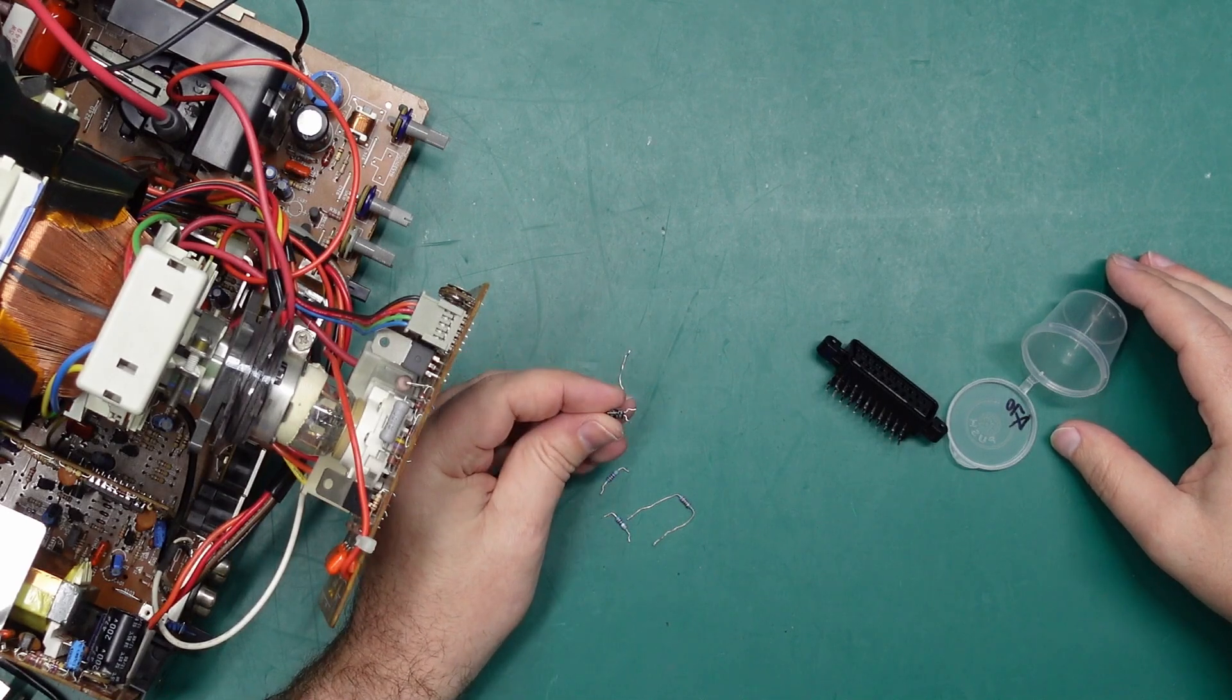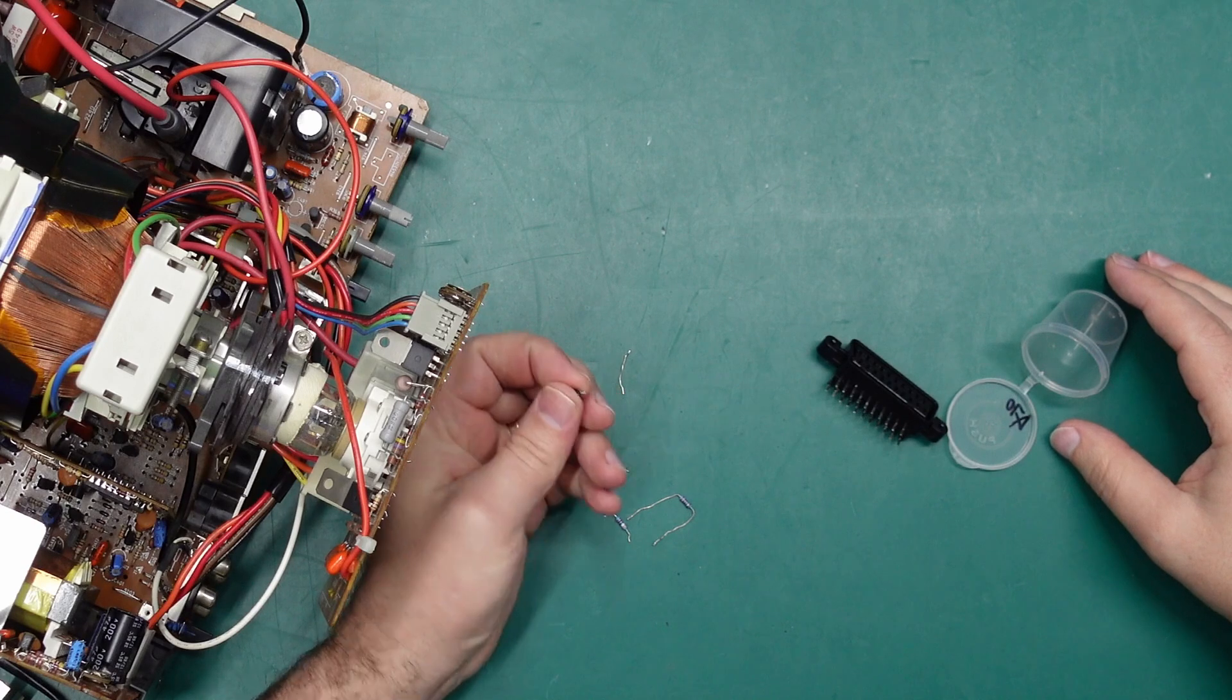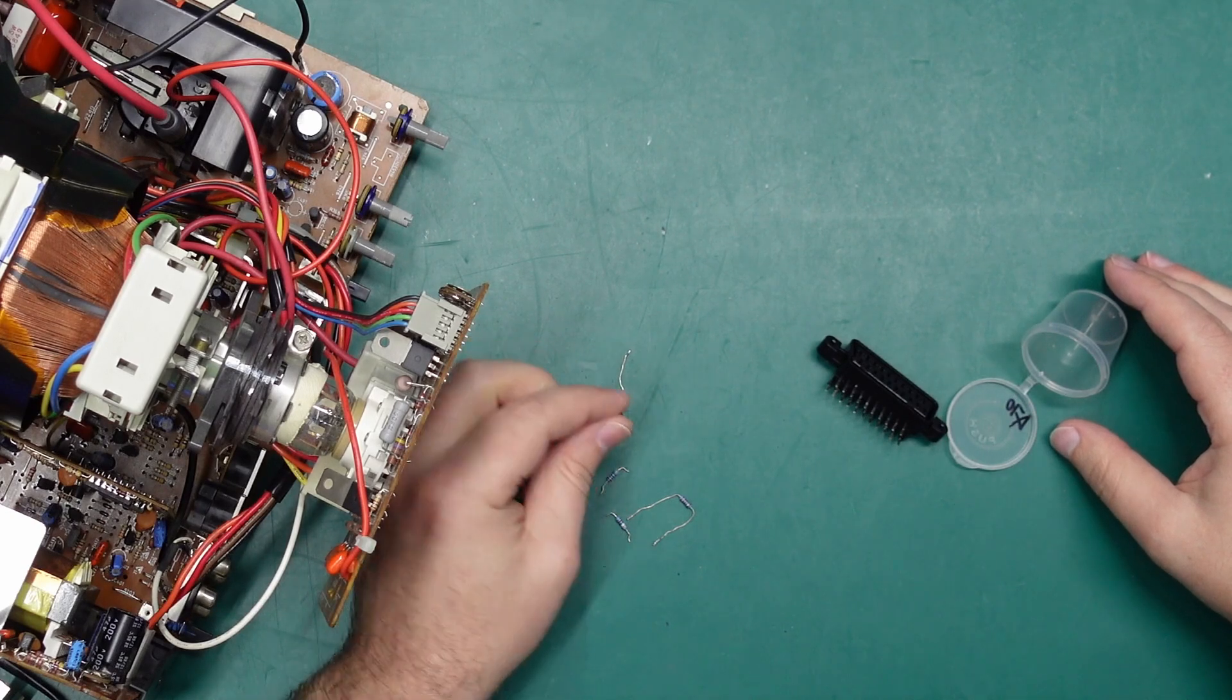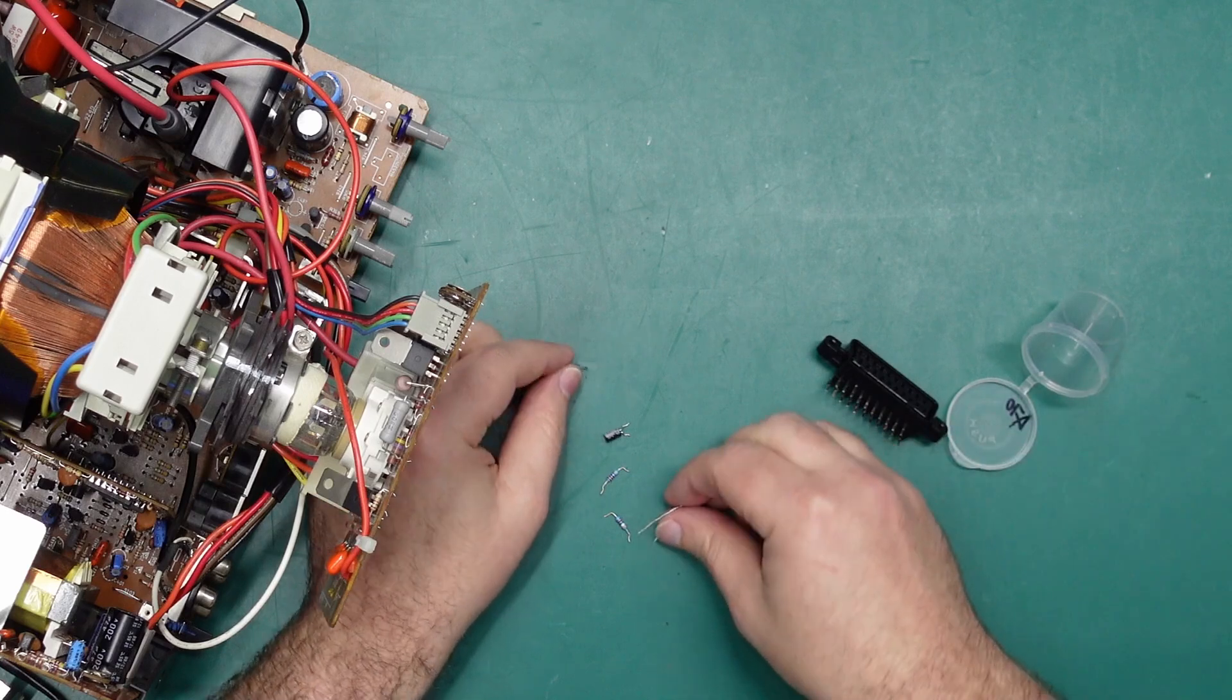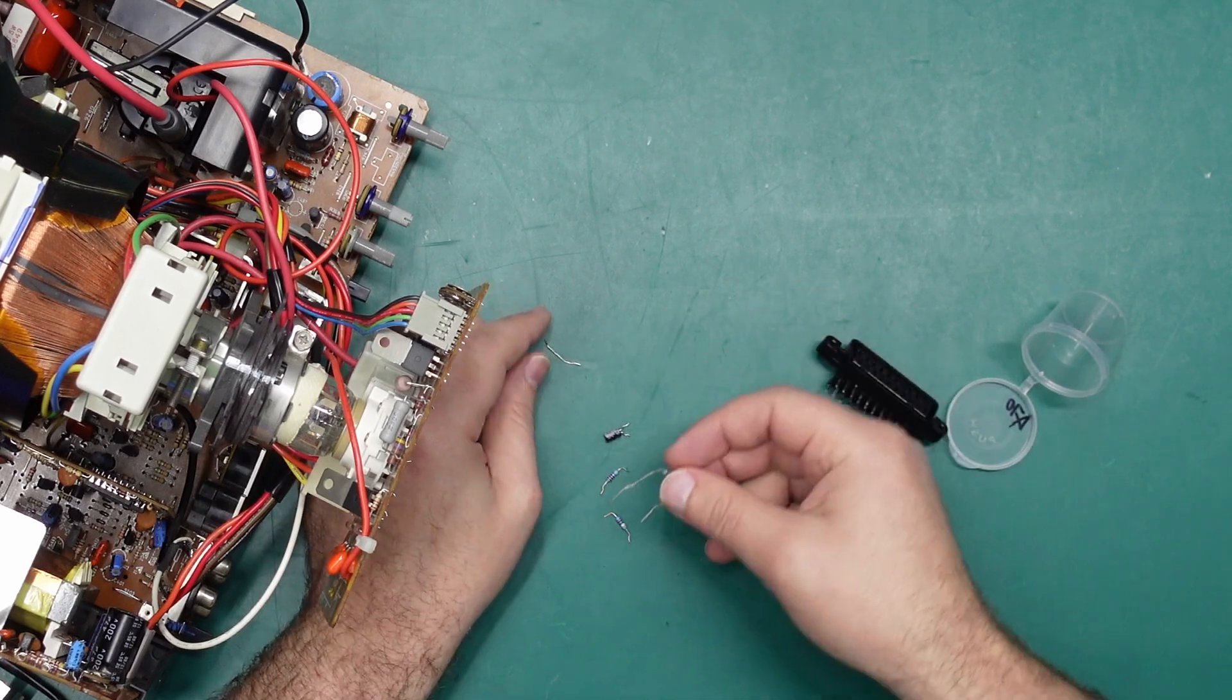And just a little 2.2 microfarad 16 volt or higher capacitor, and a little jumper wire. You can always just use the leg off one of the resistors for that.